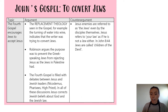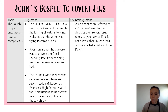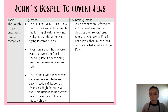A second argument is one put forward by the scholar Robinson, who argues that the purpose of John's Gospel was to prevent the Greek-speaking Jews from rejecting Jesus as the Jews in Palestine had. That's looking more historically at why the purpose might be to convert Jews in terms of accepting Jesus. The third argument is that the fourth Gospel, John's Gospel, is filled with debates between Jesus and Jewish leaders, and in all of these, Jesus corrects Jewish belief about God and the Jewish law — giving Jewish readers reasons to accept Jesus by correcting their belief.